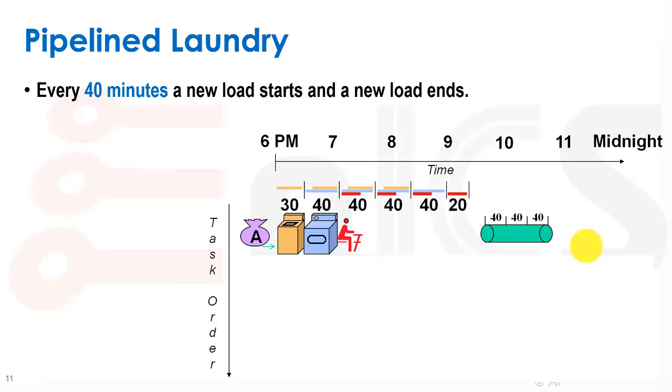So our first load obviously takes 90 minutes. That's the way life is, we can't reduce the latency of this. But after finishing our first load through the washing machine, we can actually start the second load. And the second load can operate at the same time that we're actually doing the drying.